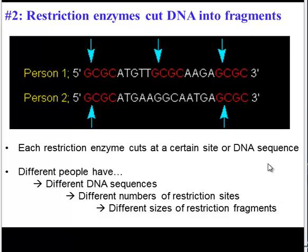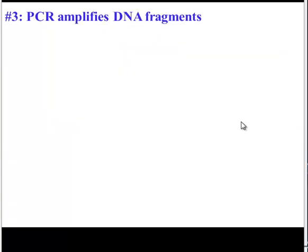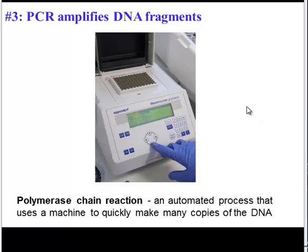So how can we tell the difference in fragment size? DNA sequences are super, super tiny. Well, we're going to use something called PCR — polymerase chain reaction — first of all, to make lots of copies of all those fragments. This process involves a machine and the use of the enzyme DNA polymerase to make tons of copies of all those little DNA fragments.